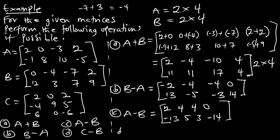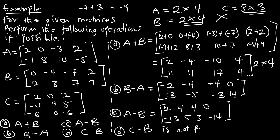For D, C minus B: matrix C has an order of 3 by 3. Can we perform subtraction on a 3 by 3 and a 2 by 4 matrix? No — it is not possible because they do not have the same order. So C minus B is not possible, and similarly B minus C is not possible. C minus A and A minus C are also not possible because they do not have the same order. Always check the order of the matrices before performing addition or subtraction. Thank you for watching this episode.